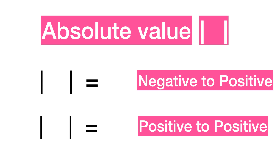Absolute value is a symbol that makes negative numbers to positive numbers. For example, if you put negative 3 into the symbol, then the value becomes 3. The absolute value symbol makes negative numbers to positive numbers.